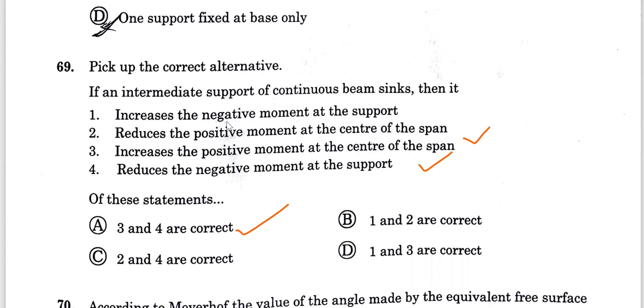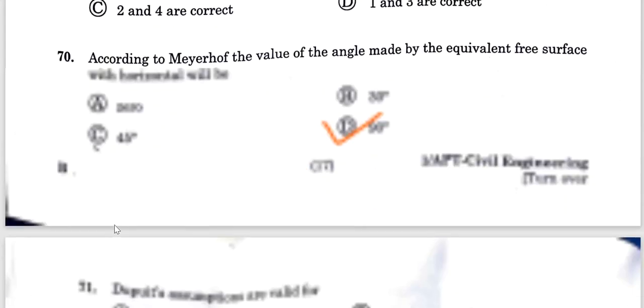Question 69: If the intermediate support of a continuous beam sinks, what should it be? The first condition is positive moment at the center of the span increases, and the second condition is negative moment at support reduces. Mid-span positive moment increases. So only options 3 and 4 are correct. Option A is the correct answer.